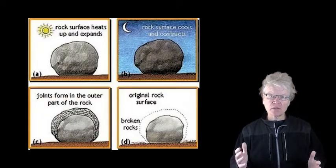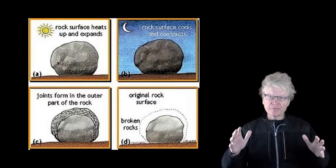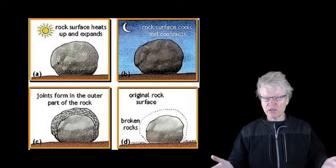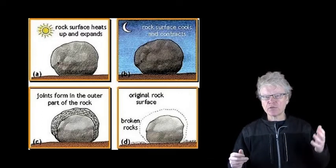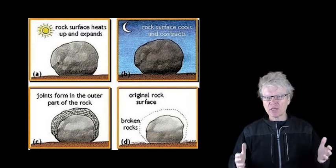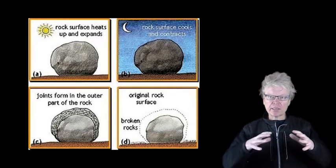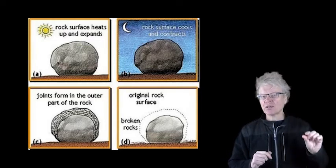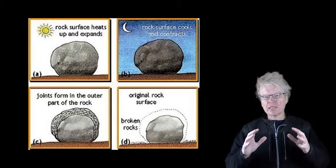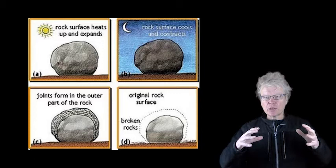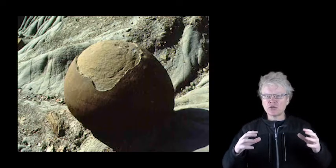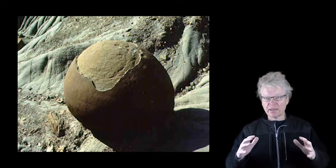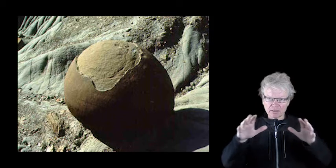Another type is thermal expansion. A rock can heat up - this often occurs in desert regions where you have a big diurnal difference in temperature, with very hot days and very cold nights. As the rock heats up it expands, and as it cools down it contracts. The heating and cooling generally only occurs on a thin outer layer. That continued change in expansion and contraction will cause an eventual crack in the rock, often occurring in the thin outer layer.